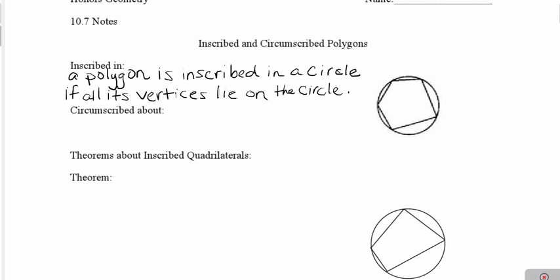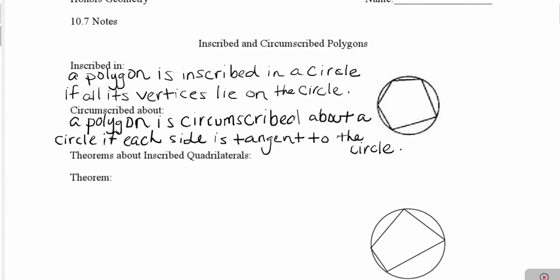Now circumscribed: a polygon is circumscribed about a circle if each of its sides are tangent to that circle. So you're going to need to know the difference between these two vocabulary words. We can also talk about a circle being inscribed in a polygon or a circle being circumscribed about a polygon.